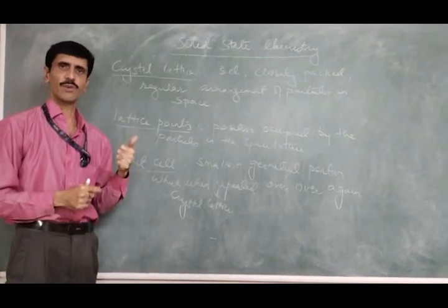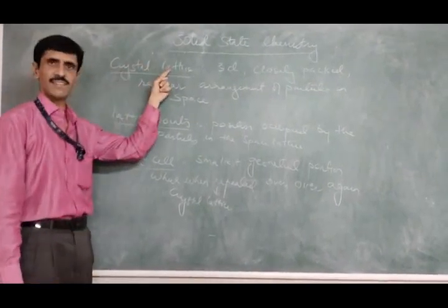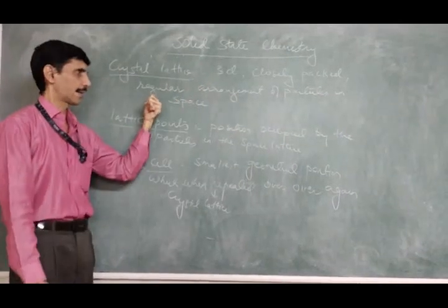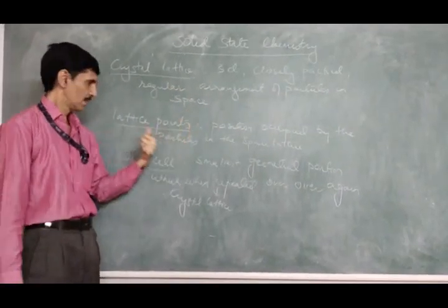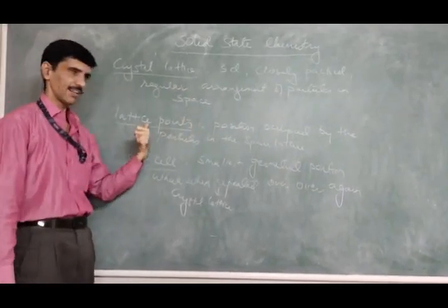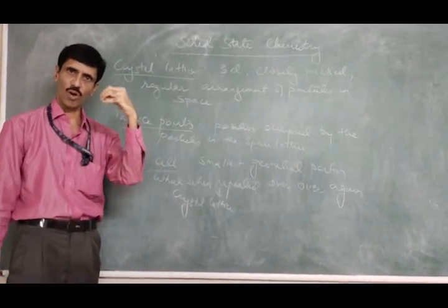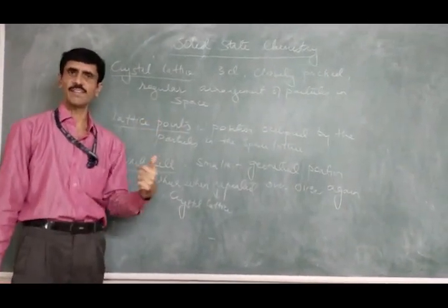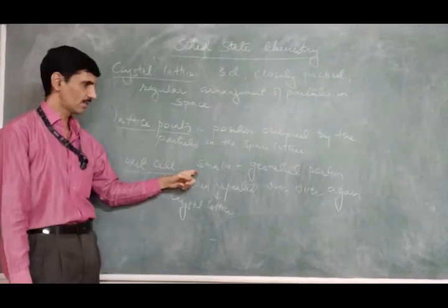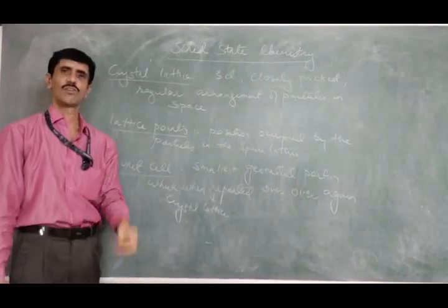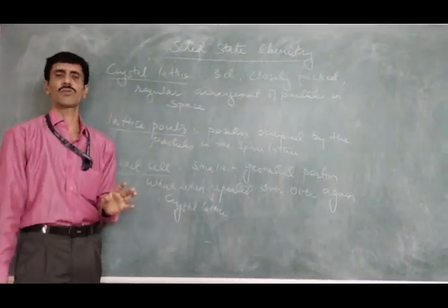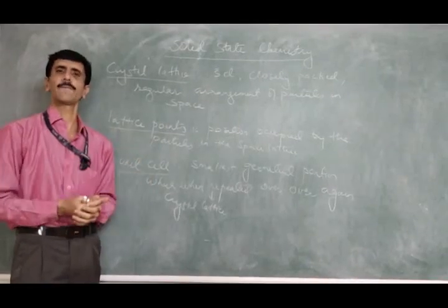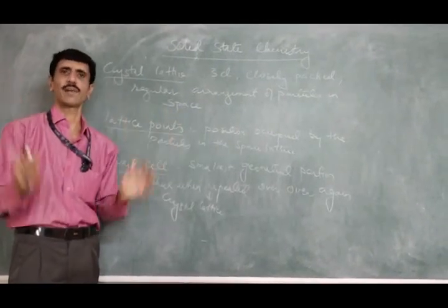So to summarize: the first term is crystal lattice — three dimensional, closely packed, regular arrangement of particles. The second term is lattice points — the position which is occupied by the particles in the space lattice. And the third term is unit cell — the smallest geometrical portion which, when repeated, makes the entire crystal lattice.